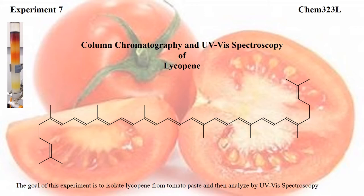This is the pre-lab lecture for experiment number seven, column chromatography and UV-visible spectroscopy of lycopene. The goal of this experiment is to isolate lycopene from tomato paste and then analyze it by UV-visible spectroscopy.